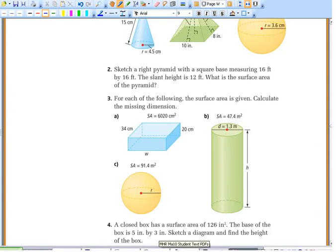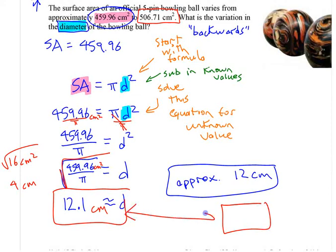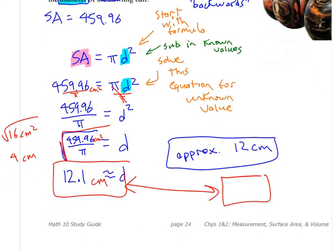For that question that we were just doing, I didn't actually finish it, right? Because it actually says, what is the variation in the diameter? I found the lower diameter. You could do the same thing with the other surface area to find the upper diameter, and then you can see how far apart they are. You could say it ranges from 12.1 to whatever. I didn't actually answer the question properly, but I think you could do the other side of that yourself pretty easily.